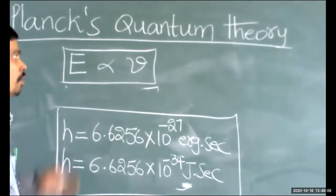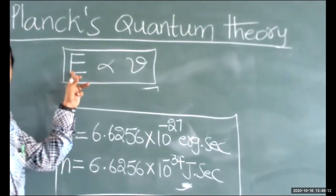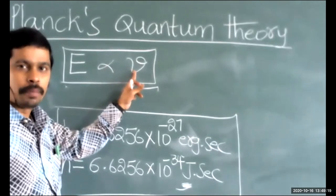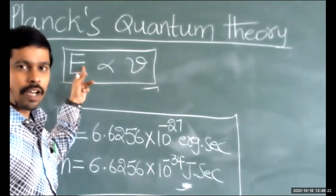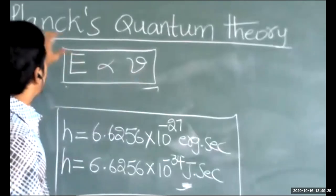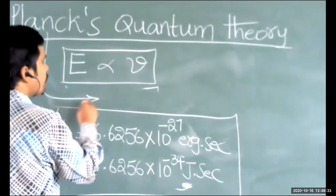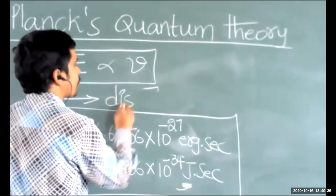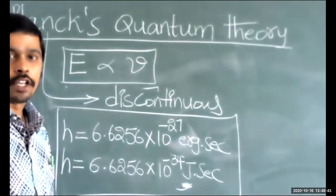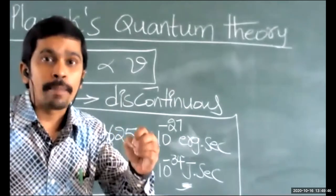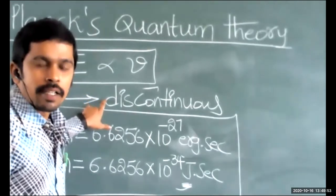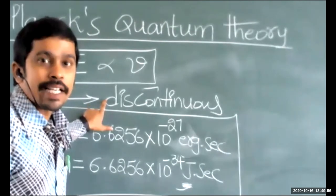In Planck's quantum theory, Max Planck expressed that energy of emitted radiation of a hot body is directly proportional to its frequency, or energy of absorbed radiation is directly proportional to frequency of absorbed radiation. The emission or absorption of energy is discontinuous. Whenever radiations are emitted in a discontinuous manner, those radiations form a discontinuous spectrum.